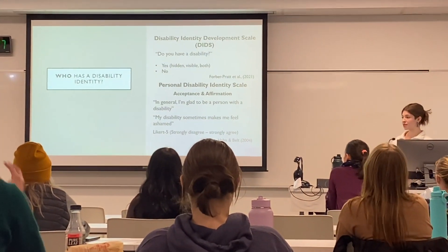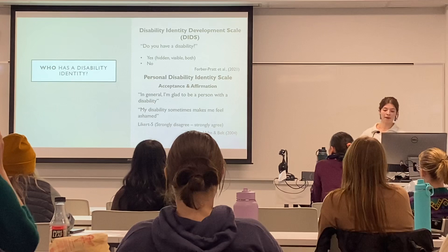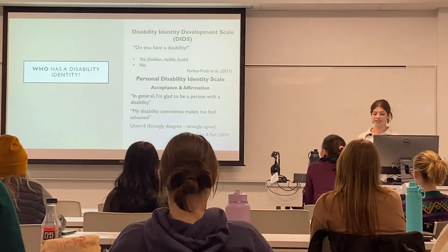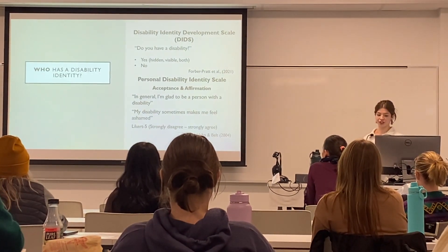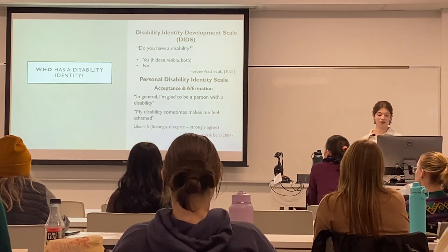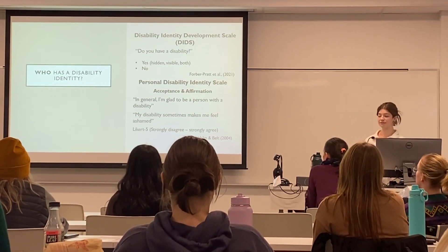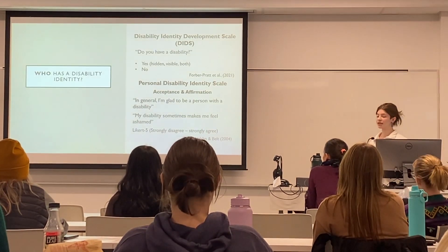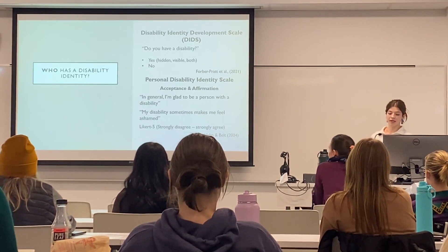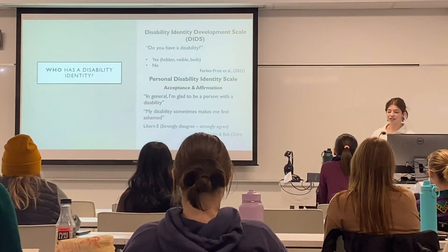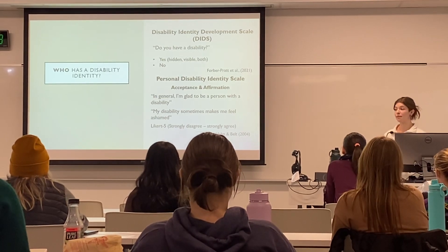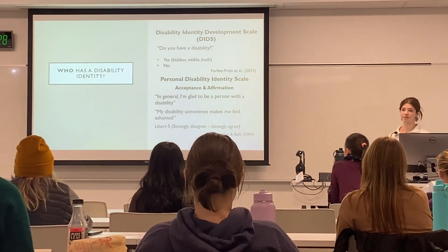In terms of their relationship with this identity, we will use the Personal Disability Identity Scale of Acceptance and Affirmation. This measure asks participants on a scale from one, strongly disagree, to five, strongly agree, how they feel about each of the eight prompts — such as 'In general, I'm glad to be a person with a disability,' or 'My disability sometimes makes me feel ashamed.'